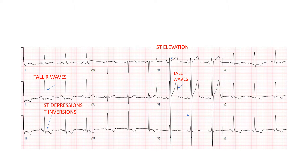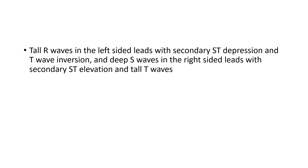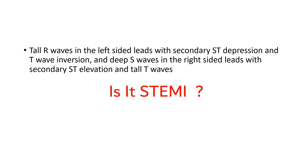The next question arises: what might be causing this chest pain — is this ischemia, or is something else going on? Let's summarize our findings. We can see tall R waves in the left-side leads with secondary ST depression and T wave inversions, and deep S waves in the right-side leads with secondary ST elevation and tall T waves. So is this STEMI or not STEMI?